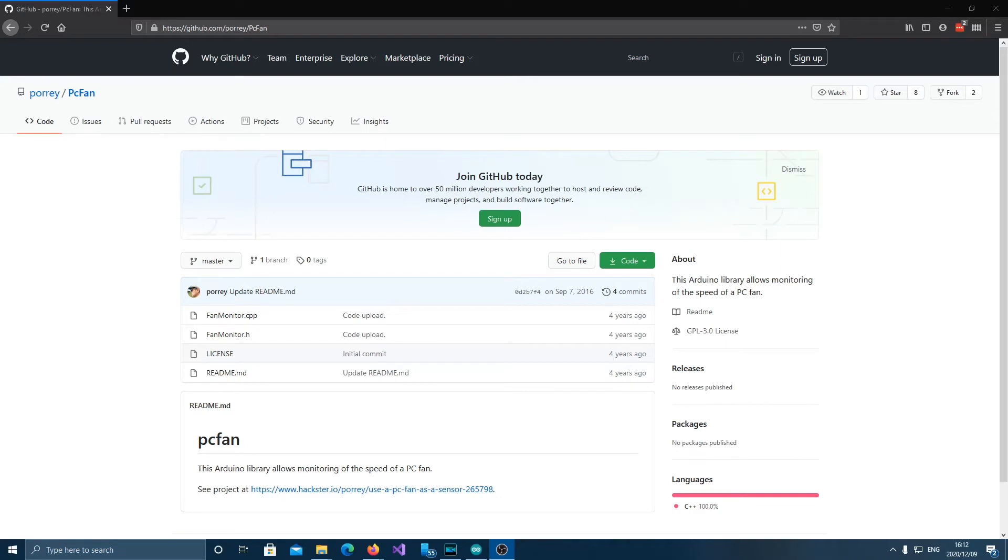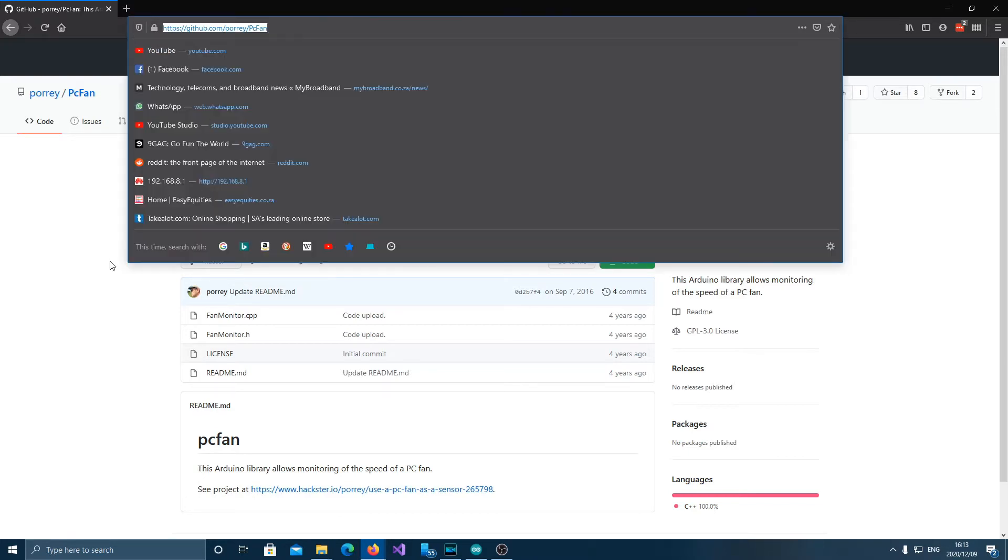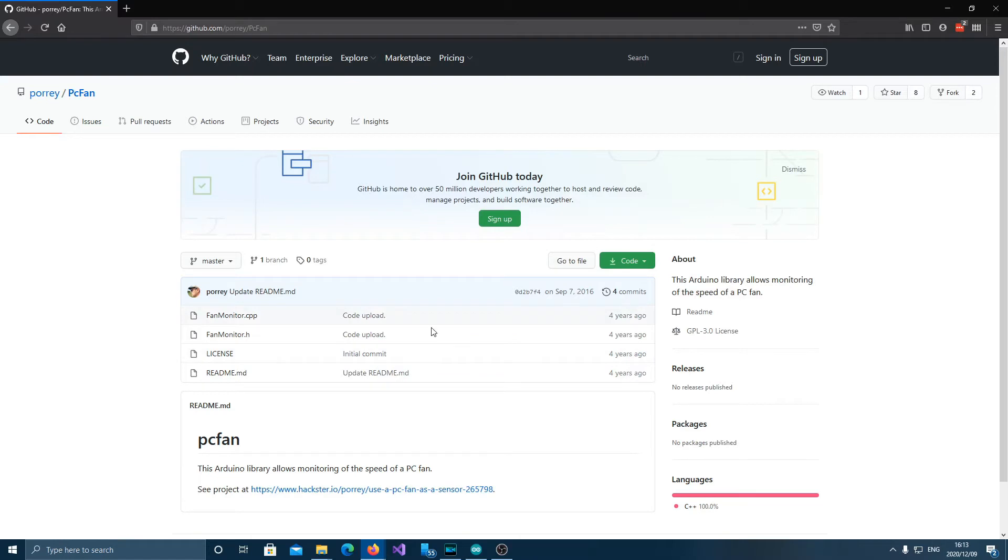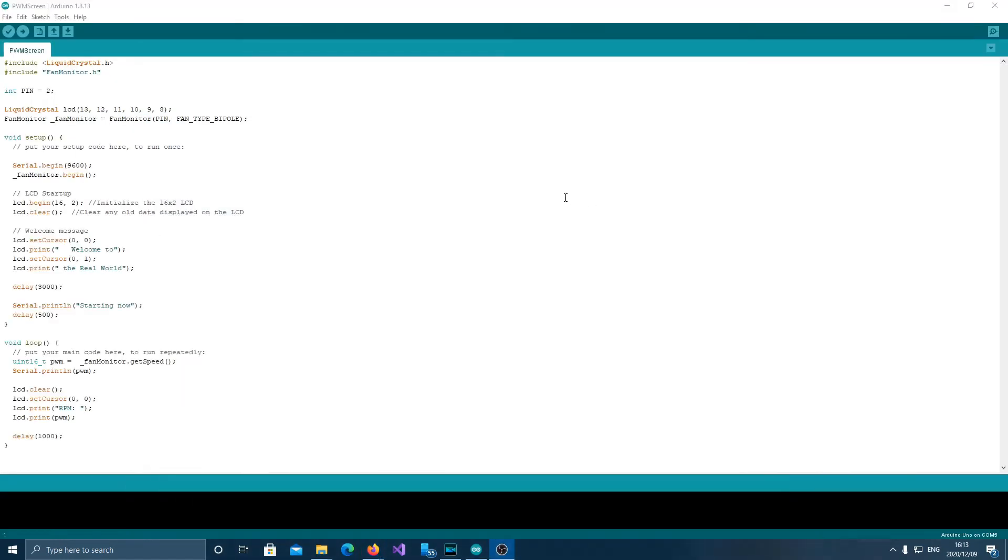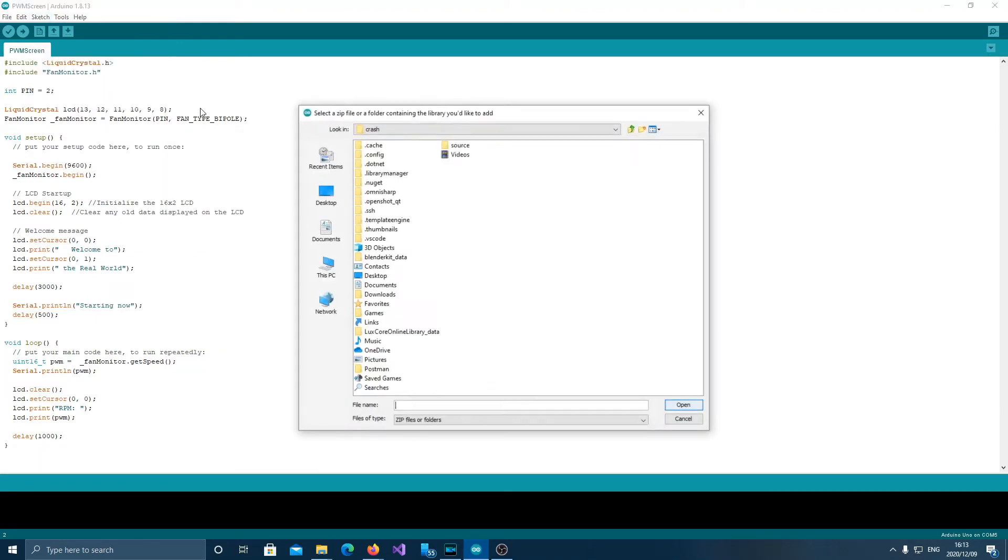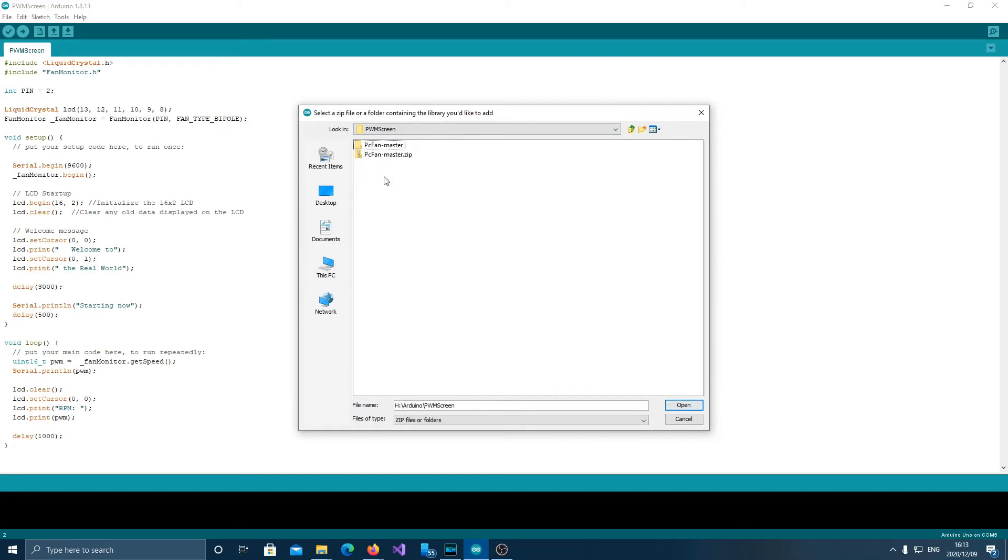You're also going to need a little bit of code. The easiest way to go about this is to use a library. We'll be using the PC fan library by Pori. I have it on Github. The link will be in the description. You basically just download the code in your Arduino sketch. So sketch, include library, add zip file.